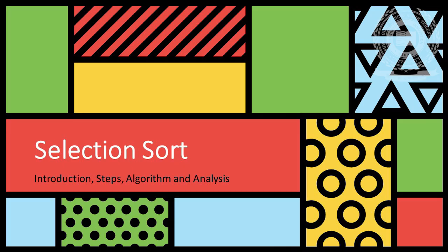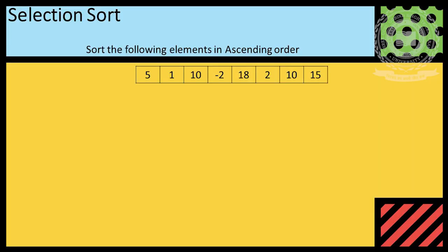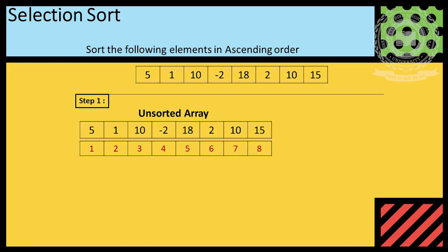In upcoming section, we will be covering selection sort, its introduction, steps and algorithm and analysis. Let's take an example of an array with elements 5, 1, 10, minus 2, 18, 2, 10, 15. In step 1, we assume complete array as unsorted.